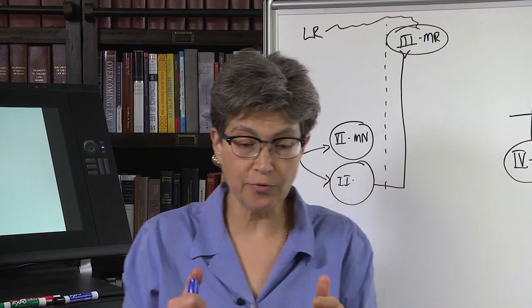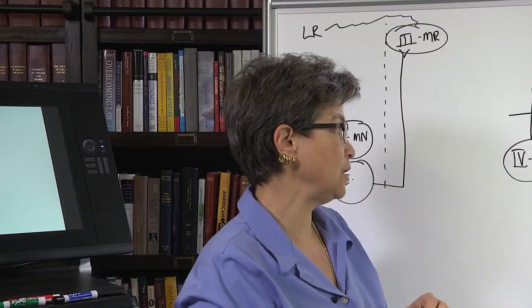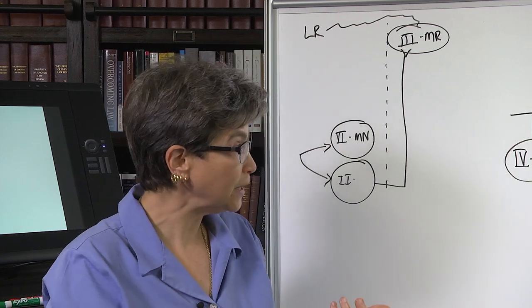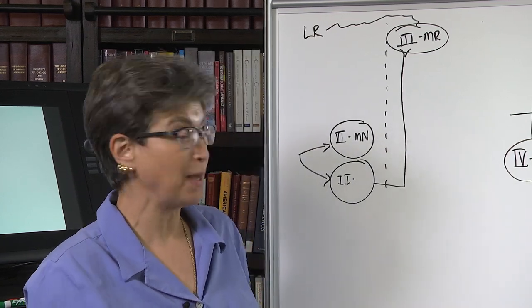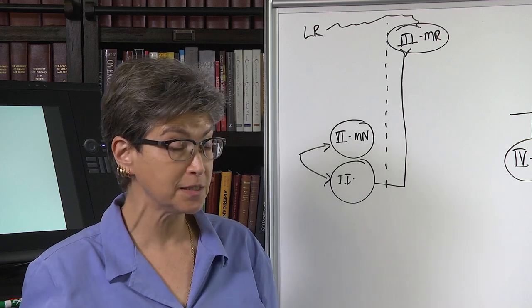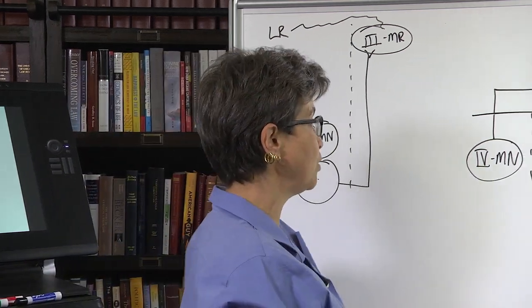There are two other pairs. So the superior oblique is paired with the contralateral inferior rectus.